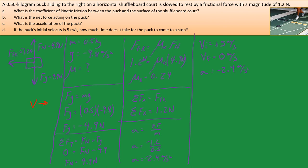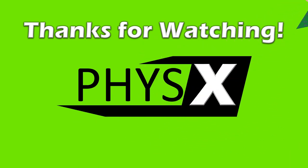Using VF equals VI plus AT, and substituting in, the shuffleboard puck comes to a stop in 0.48 seconds — less than half a second. If you've never played shuffleboard, it's a lot of fun. Check it out — it's not just for old people. Thanks for watching, and have a great day.